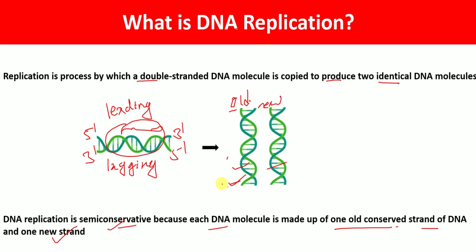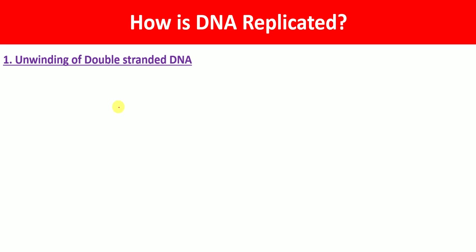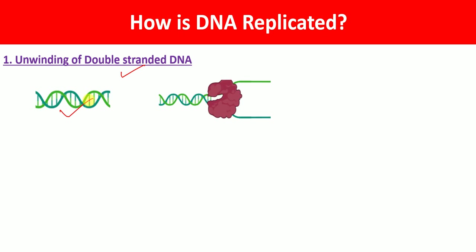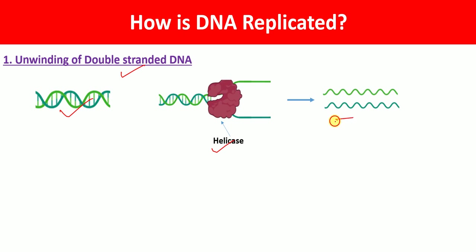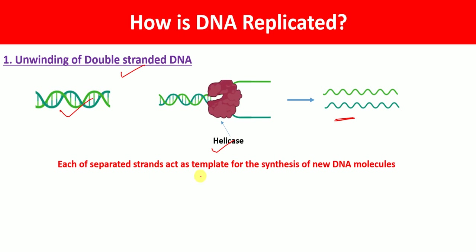So how does DNA replication occur? The first step in the DNA replication process is the unwinding of the double-stranded DNA. The enzyme responsible for this process is called DNA helicase. DNA helicase breaks the bonds between the double strand, unwinding the double-stranded DNA molecule into single strands, and each of these single strands acts as a template for the synthesis of a new DNA molecule.